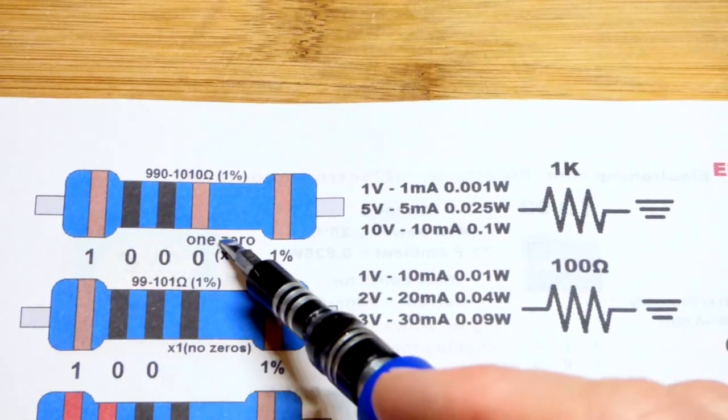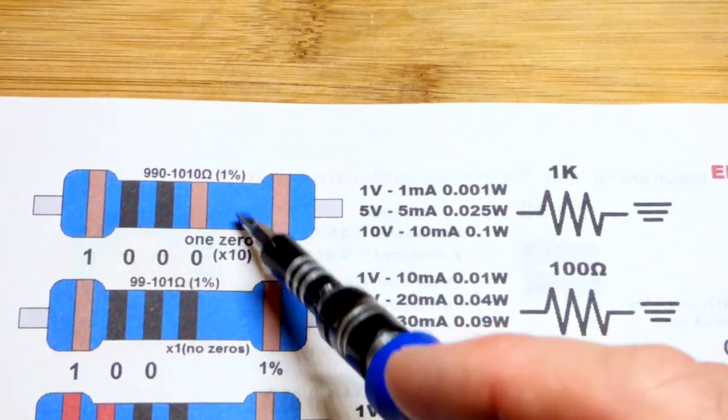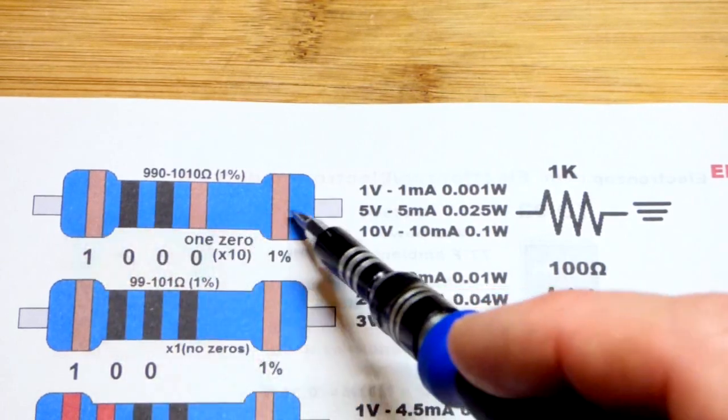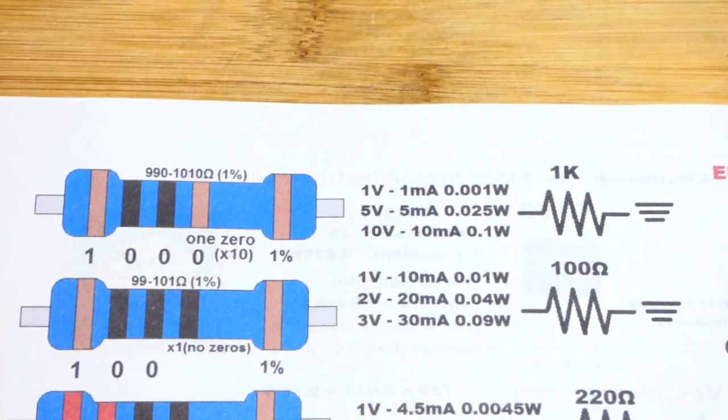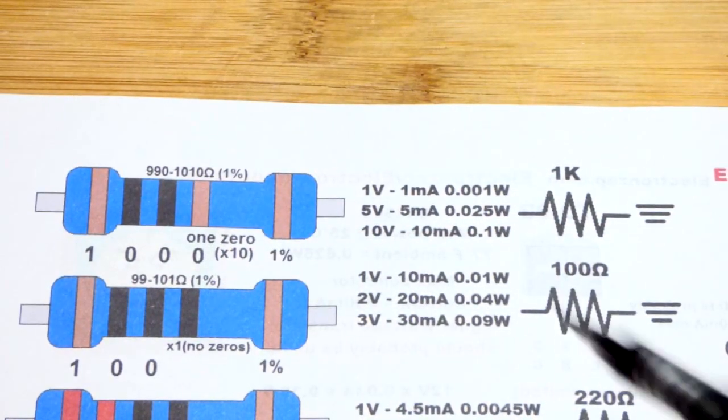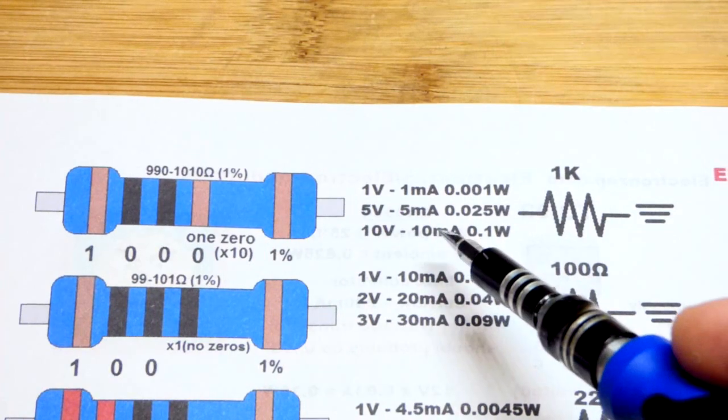So now 1,000 ohms. 1,000 ohm resistor, there's the color code for these blue ones that have five total stripes. We got one percent at the end there so it can be one percent higher or lower. That's what you can expect. And the cheap ones that I got sometimes I think they even fall out of that range.